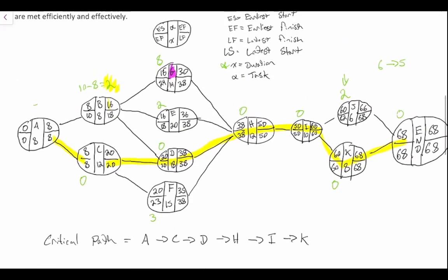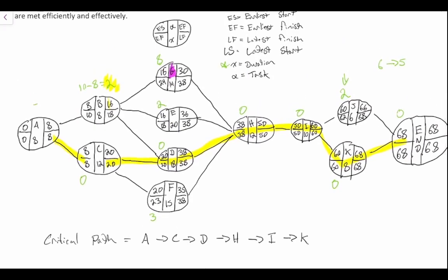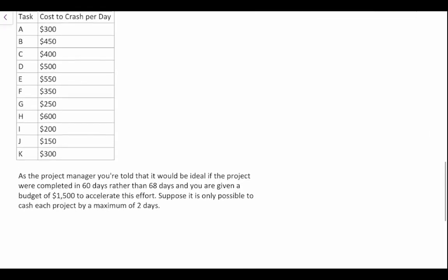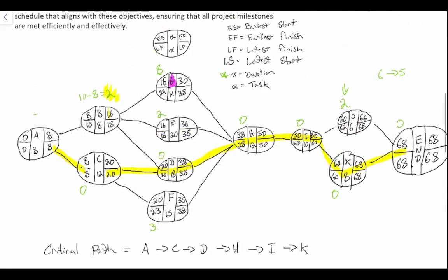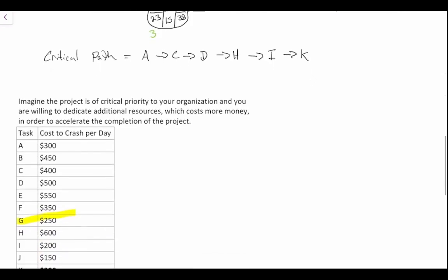Simply reducing the time to complete project J won't help us finish the overall project faster because of that existing slack. We can do the same analysis for other nodes — like point G, which has a slack of 8 (24 minus 16, latest start minus earliest start). G is also relatively inexpensive to crash but it's not on the critical path, so it won't speed up the project either.